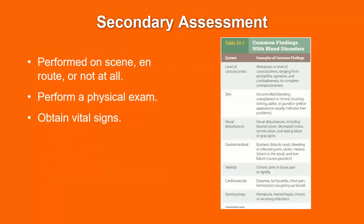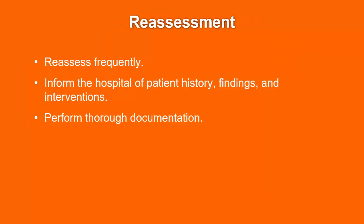Your secondary assessment may be performed on scene, en route, or not at all, depending on the severity of the patient. All of the examples in table 24-3 are associated with blood disorders. If you see some of the more extreme findings, pay particular attention to the patient's overall status. Reassess quickly and frequently. If you have determined this is a critical patient, you must reassess every five minutes. Inform hospital staff of any patient history, present situation, assessment findings, and interventions, and make sure you have thoroughly documented your results.